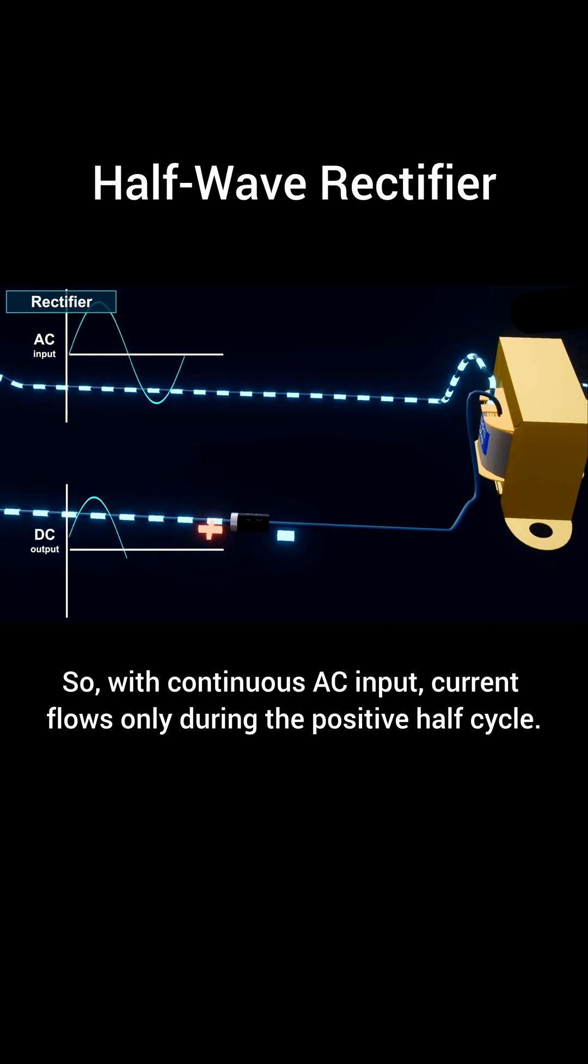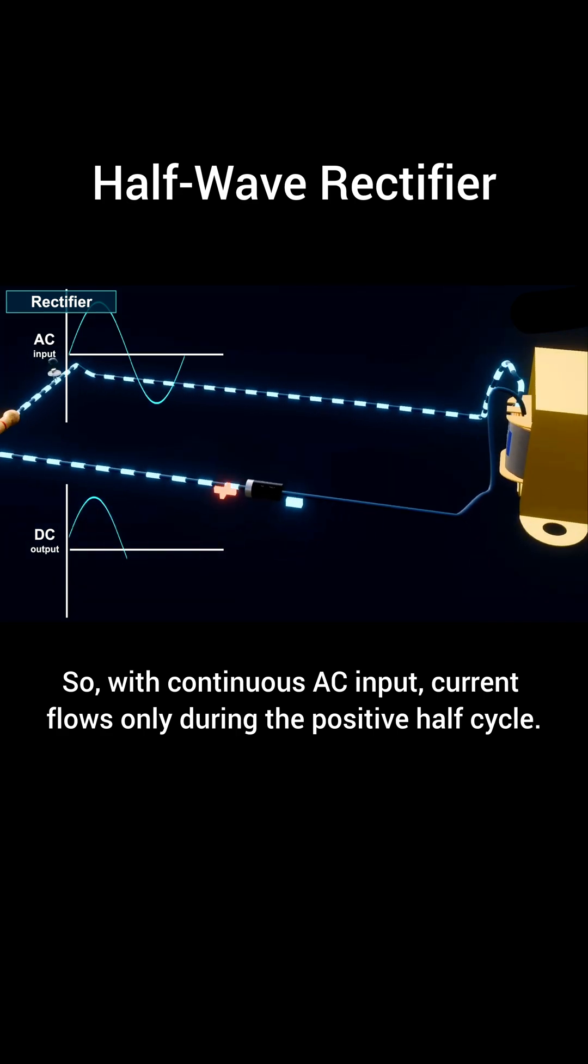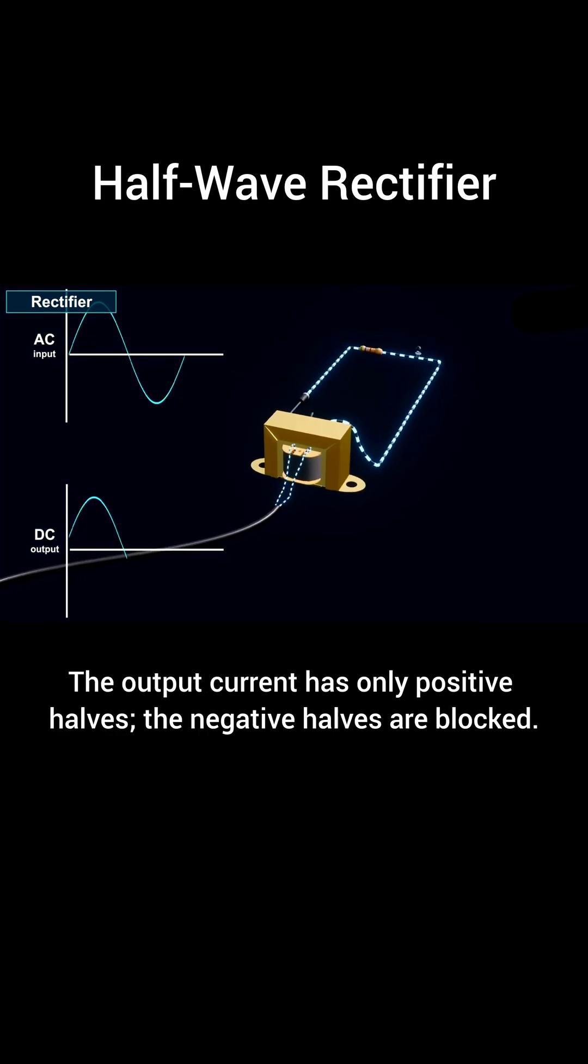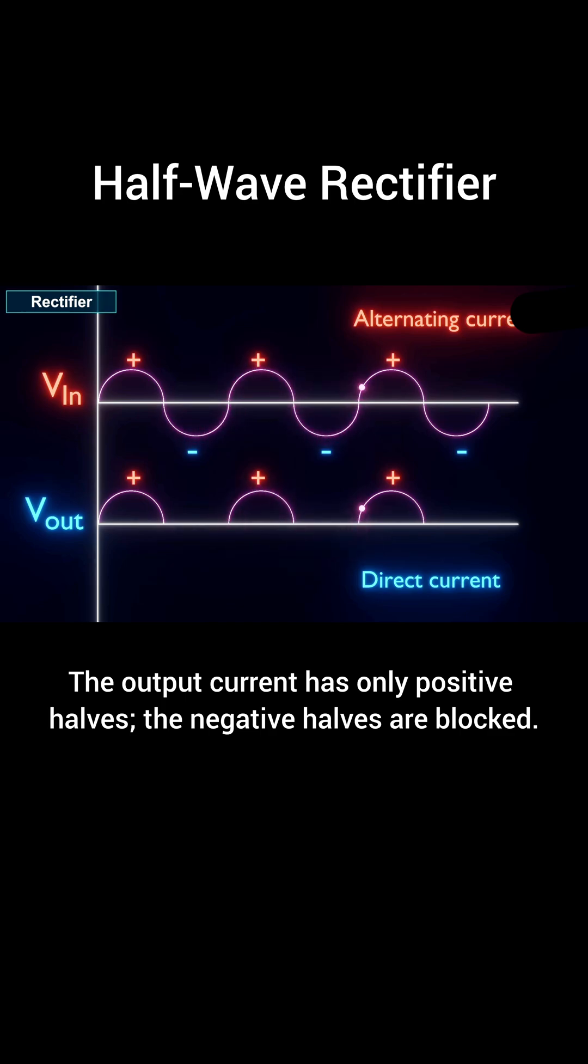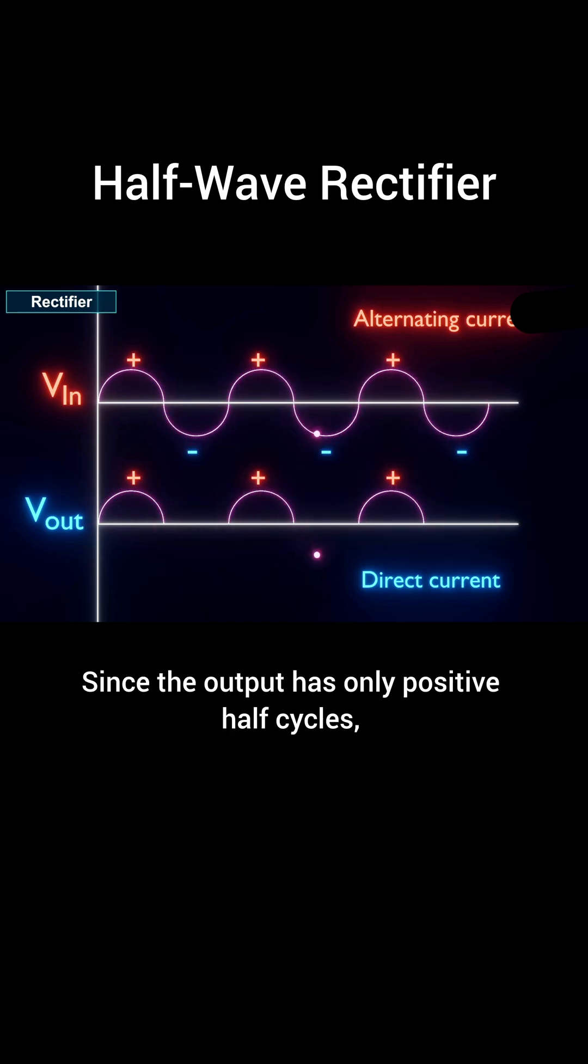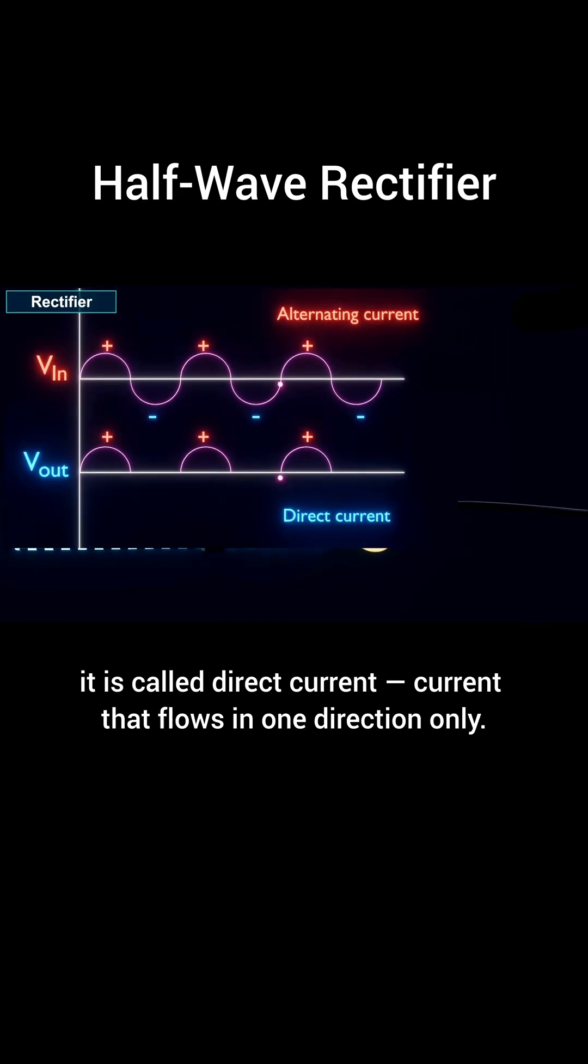So, with continuous AC input, current flows only during the positive half cycle. The output current has only positive halves. The negative halves are blocked. Since the output has only positive half cycles, it is called direct current—current that flows in one direction only.